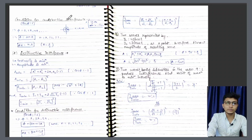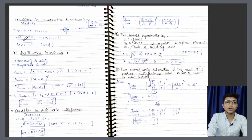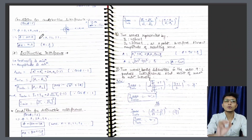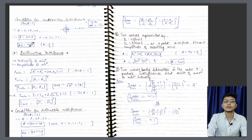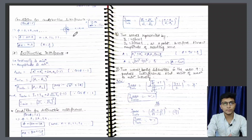Constructive interference ki condition kya hogi? Jab bhi phi ka value 0, 2 pi — jaise pehle bhi bataya hai. Aur yeh kab ho sakta hai — ek general rule banate hain: ki phi agar 2n pi hota hai, then constructive interference aayega. Ab phi = 2n pi mein, agar n ka value 0 bethate hain to phi = 0, to cos phi = 1. Agar n ka value 1 bethate hain to phi = 2 pi, cos phi ka value 1 — tab bhi theek hai. Aur path difference kya hoga: n lambda. Path difference agar n lambda ke barabar ho jaye, aur phase difference 2n pi ho jaye, to constructive interference hoga.